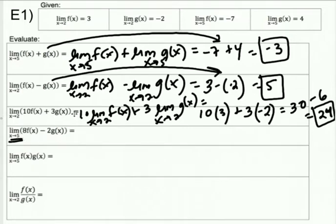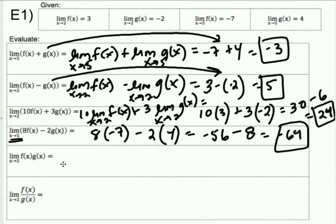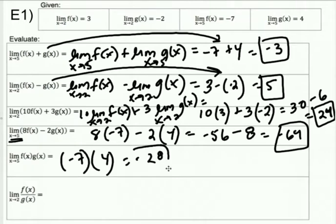Now we're using X approaches five, so be heads up about that — we're using the negative seven and the four. This is 8 times negative seven minus 2 times four, so that's negative 56 minus 8, which is negative 64. Then the limit as X approaches five of F times G — that's the F limit at five times the G limit at five, giving us negative 28.